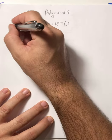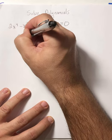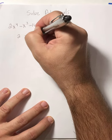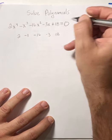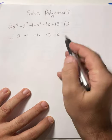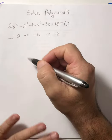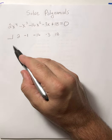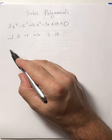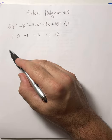Remember, for synthetic division we need our coefficients. So we have a 2, we have a negative 1, we have a negative 16, we have a negative 3, and we have an 18. So then the question boils down to what numbers do we try here? We don't just pick any random number like a 5 or a 4 or 17 or anything like that. There's a certain list of possible rational roots that we have.